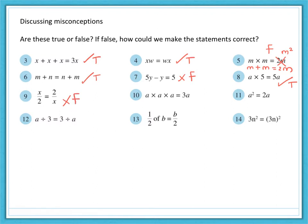Number ten, a times a times a is not equal to 3a. It's equal to a to the power of 3, or a cubed. If we were to do a plus a plus a, that would equal 3a. Number eleven, a squared is not equal to 2a. That is false. a squared is equal to a multiplied by a. Now, 2a is equal to a plus a, so there's a difference between those two calculations.